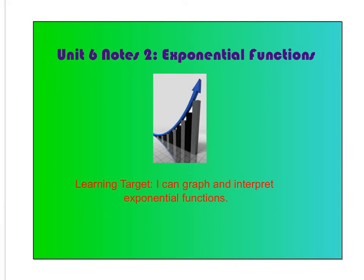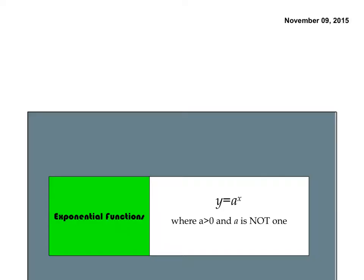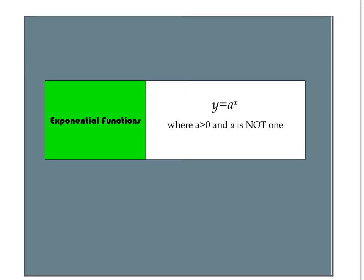Ladies and gentlemen of Algebra, we continue with unit 6, talking about exponential functions. We talked about scientific notation, which uses exponents quite a bit. Now we're going to look at what an exponential function looks like and how it behaves. An exponential function looks like f(x) = a^x, where a is not 0 and a is not 1. That's a key point.